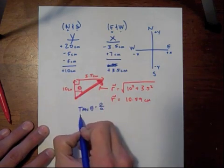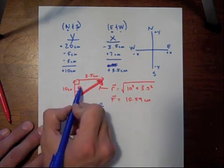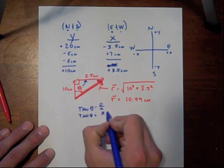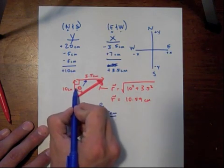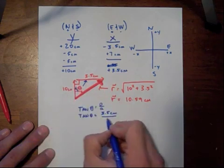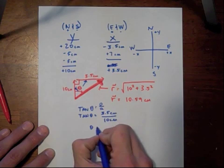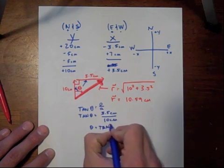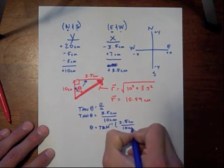Looking at the angle that we have here, the tangent of theta is equal to the opposite. So, if we go directly opposite of that, that's the 3.5 centimeter side divided by the adjacent side, so that's touching our angle, 10 centimeters. So if we put in our calculator to solve it, it's the inverse tangent of 3.5 centimeters divided by 10 centimeters.